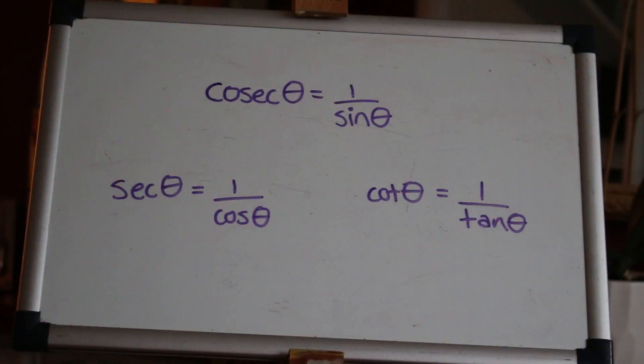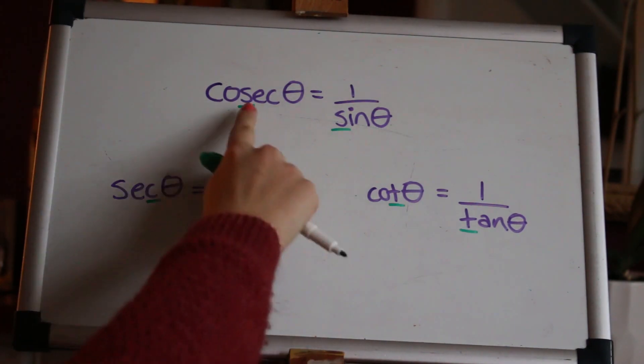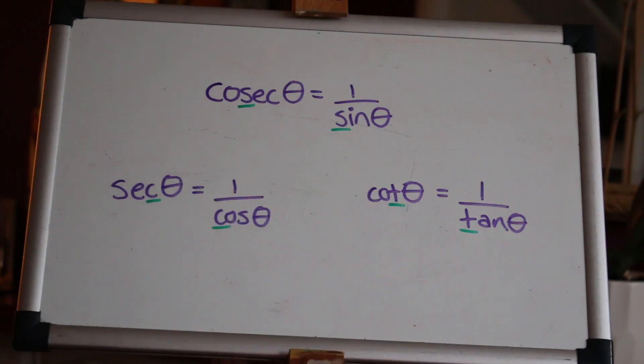The identities we're going to look at today are involving cosec, sec and cot and they're just fancy words for one over sine, cos and tan, so nothing too complicated. The easiest way to remember if you struggle to get them the right way around is to look at the third letter of each name. So as I render in green, the third letter can help you out: S and S, C and C, T and T. Now let's take a look at the identities.